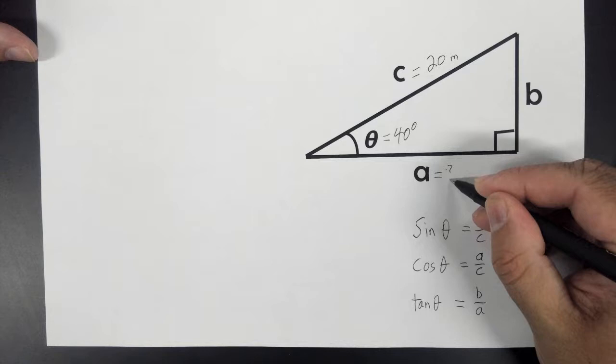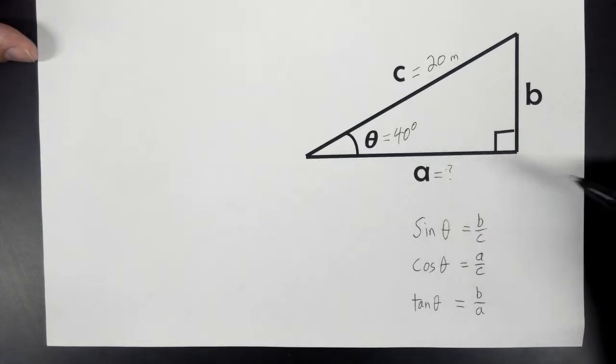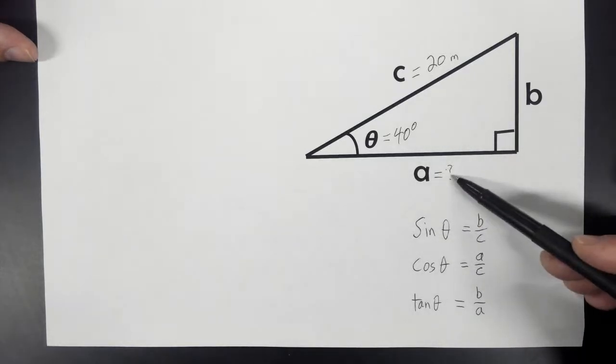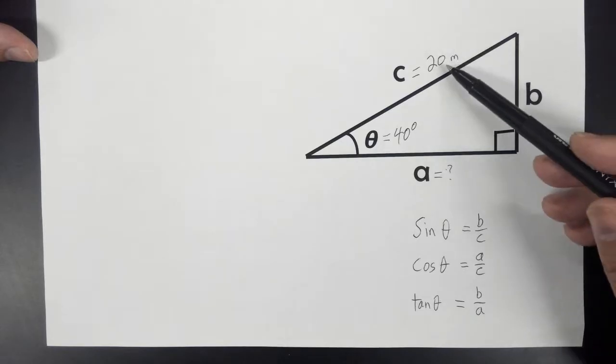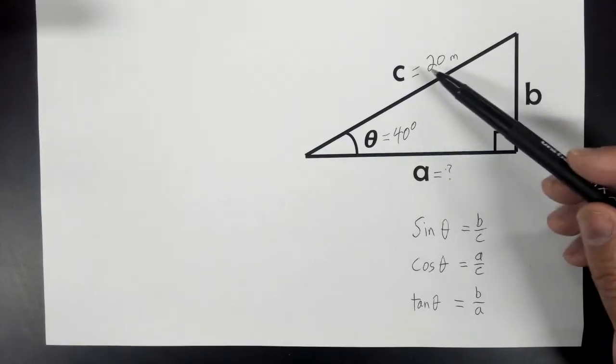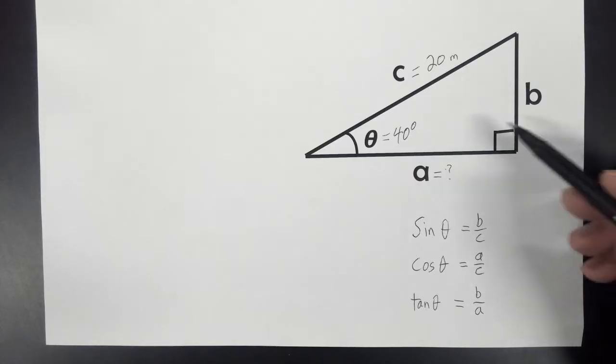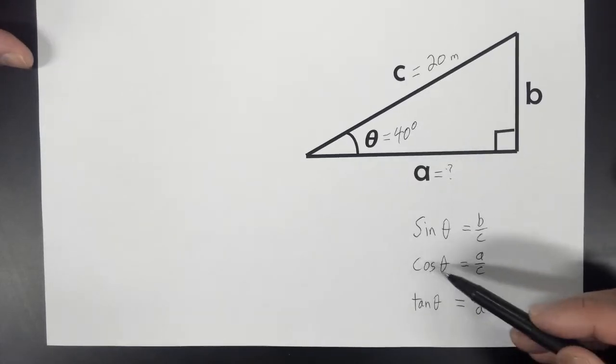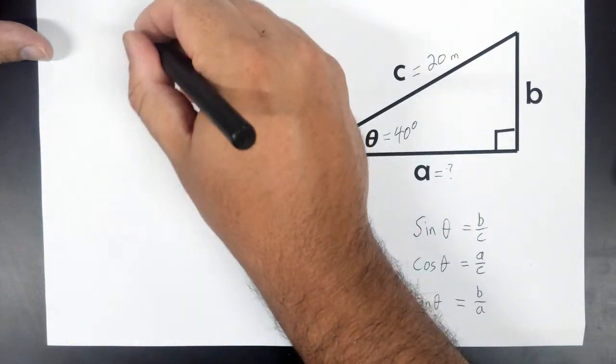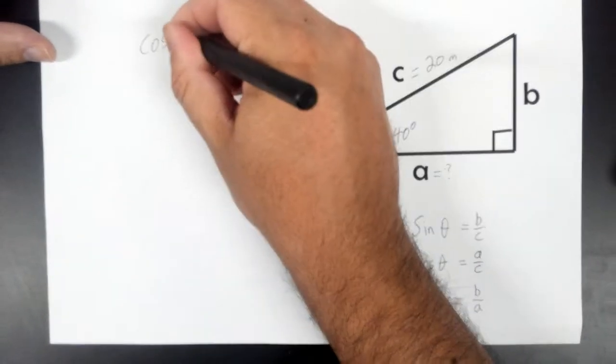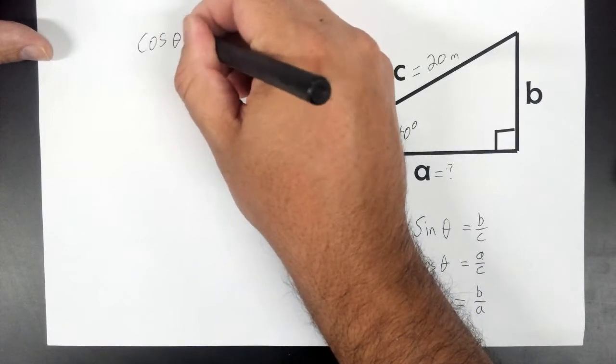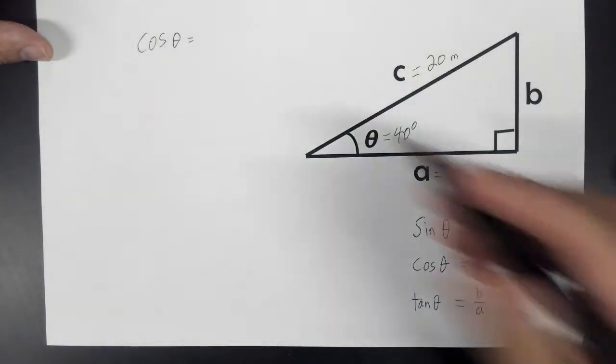We want to find A. We need one of these that has both A, which is what we don't know, and C, which we do know. That would be this one here, cosine. So cosine theta equals A over C.